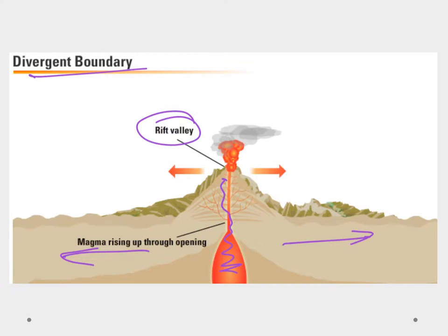Most boundary types are going to have volcanic activity, but when we have a continental-continental convergent boundary, we still get mountain building without that volcanic mountain building process.